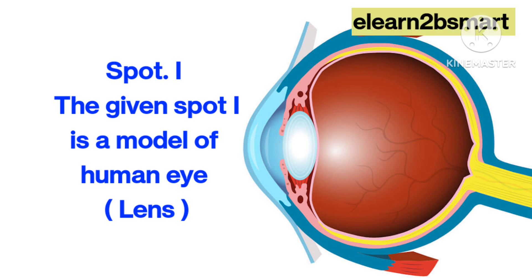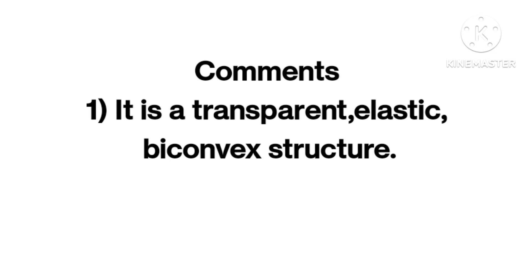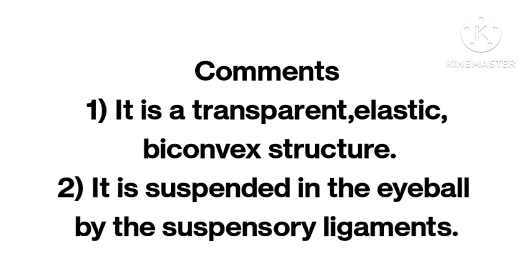Spot I. The given spot I is a model of human eye lens. Comments: It is a transparent, elastic, biconvex structure. It is suspended in the eyeball by the suspensory ligaments.